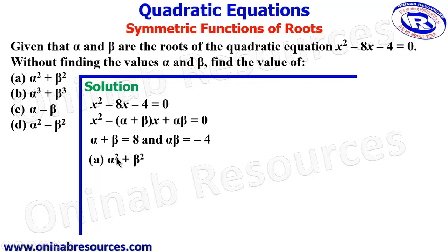So we start with (a) alpha squared plus beta squared. If it is factorized, we have it as alpha plus beta all squared minus 2 alpha beta. So we then substitute the values of alpha plus beta and alpha beta here. So substituting, we have 8 squared minus 2 times negative 4. This is giving us 64 plus 8, giving us 72. That gives alpha squared plus beta squared.